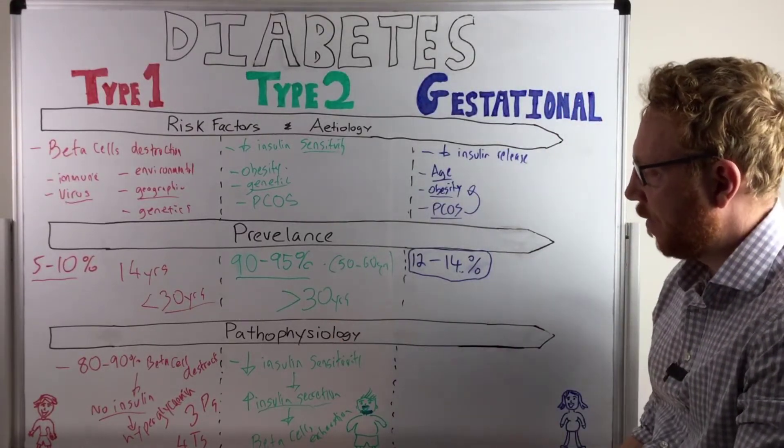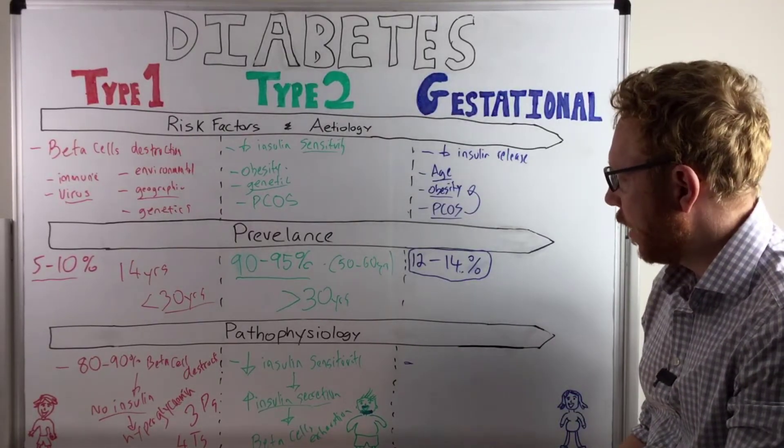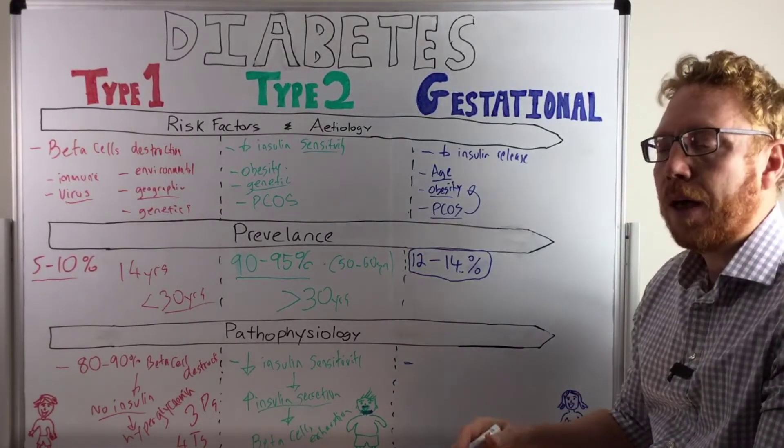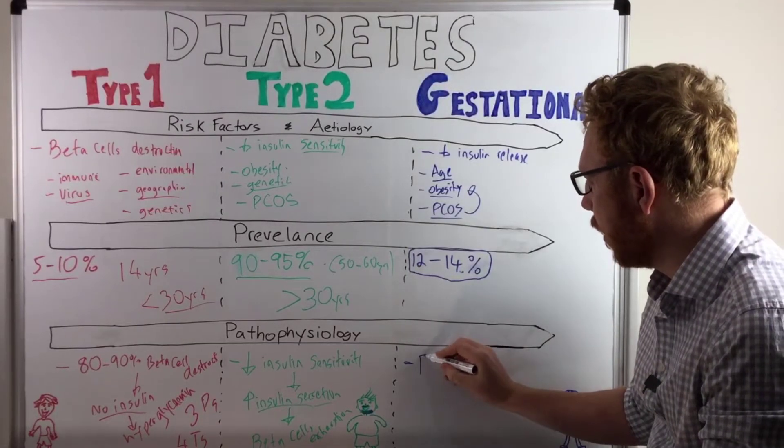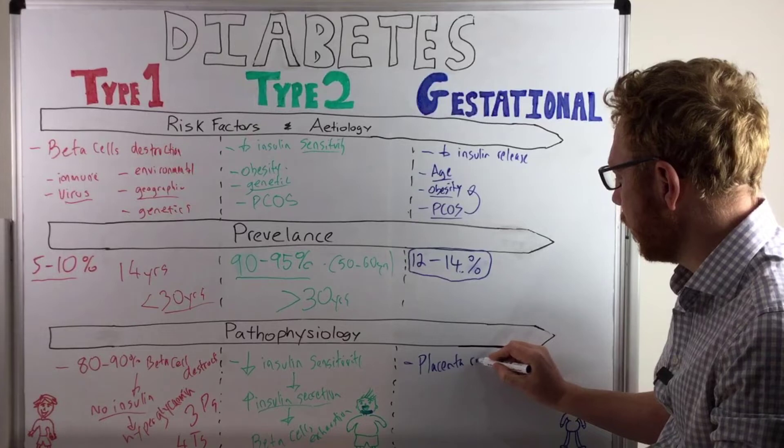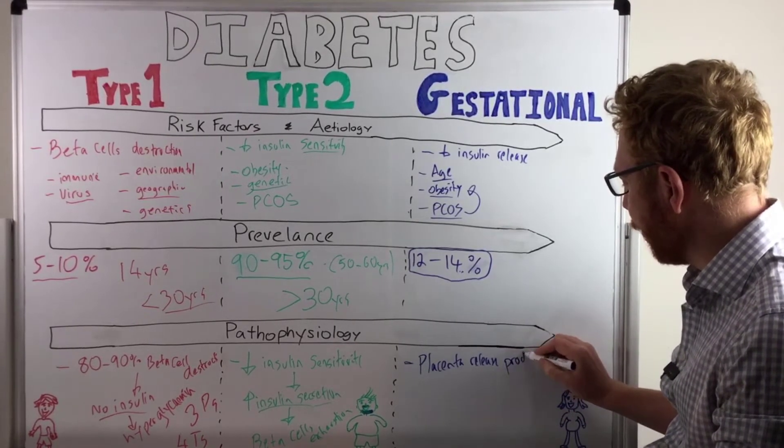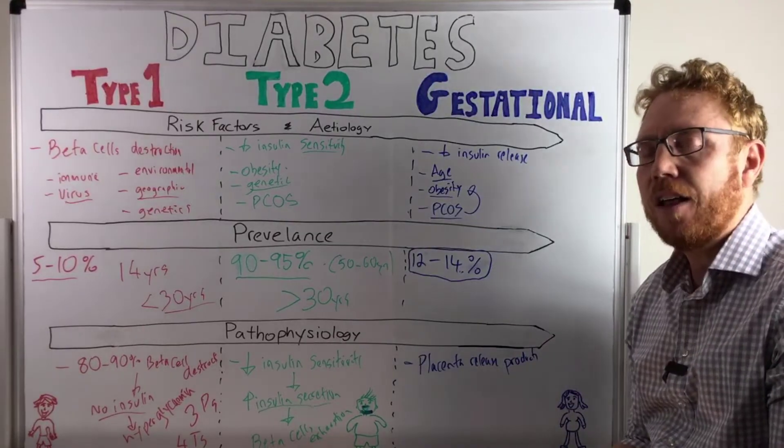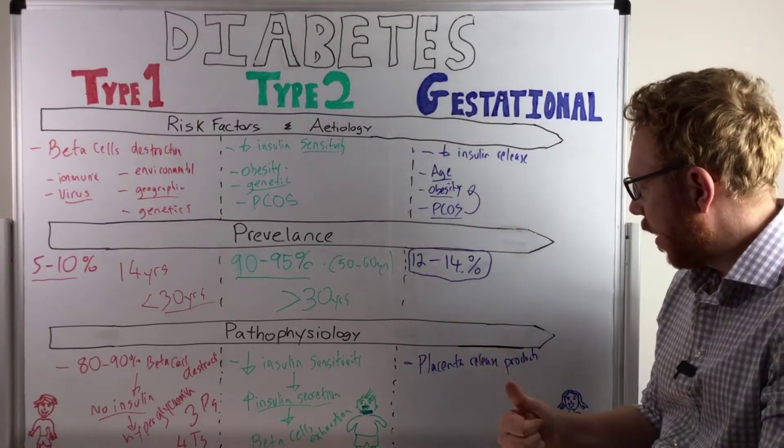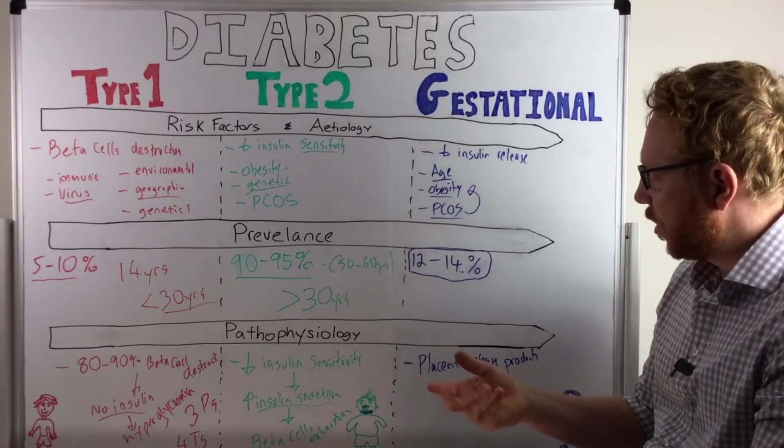Now what happens in terms of pathophysiology? Well, normally in pregnancy what happens is the placenta will release certain products. Placenta releases products into the blood. And these could be things like TNF-alpha, placental lactogen, progesterone, estrogen, things like that.